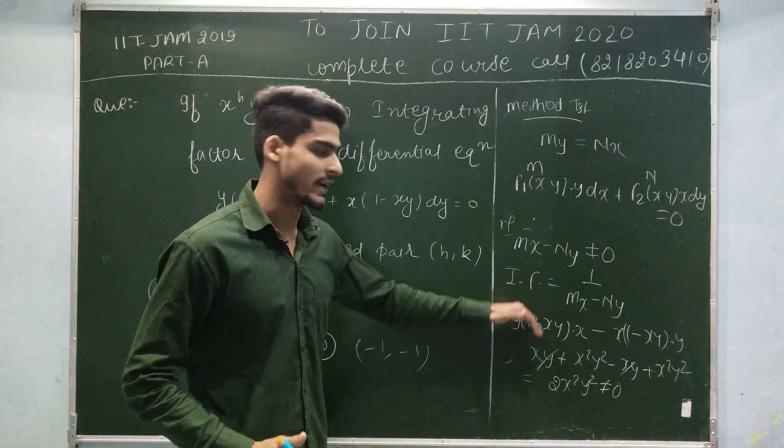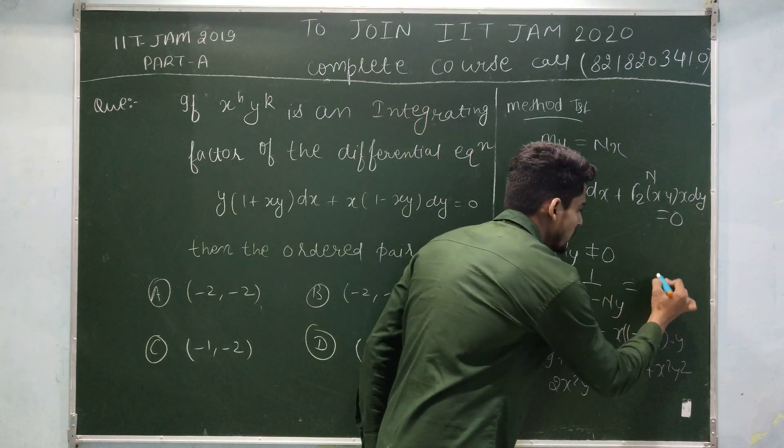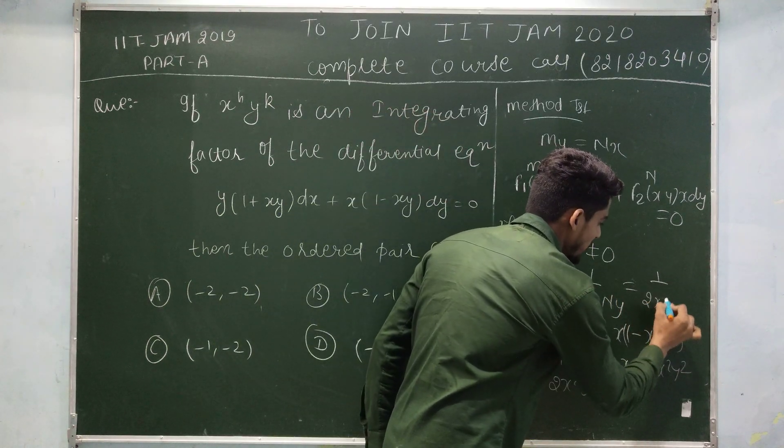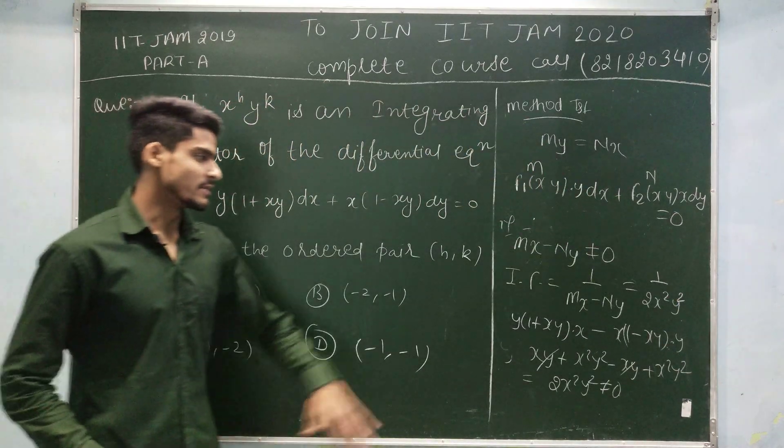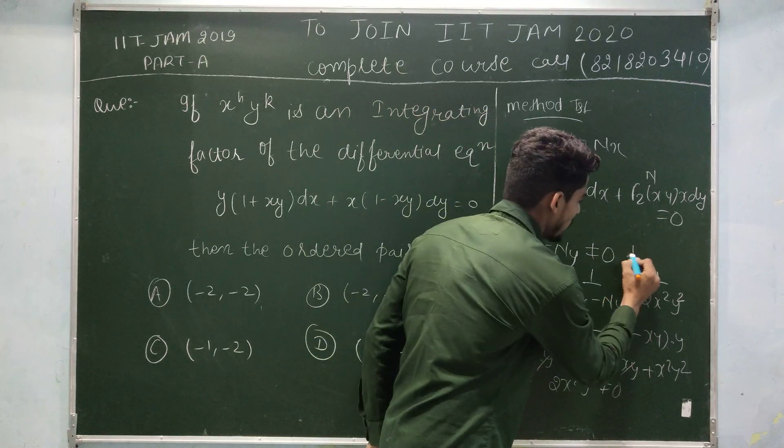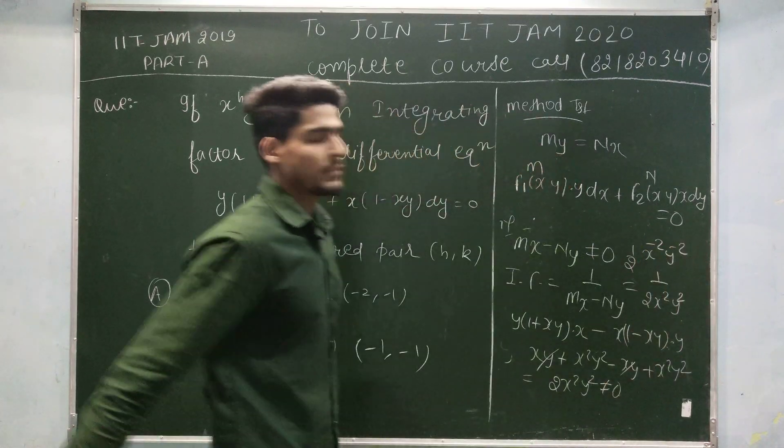Then what is the value of integrating factor? If mx minus ny is this, then integrating factor is 1 upon 2 into x square y square. And this is exactly equal to 1 by 2 x to the power minus 2 y to the power minus 2.